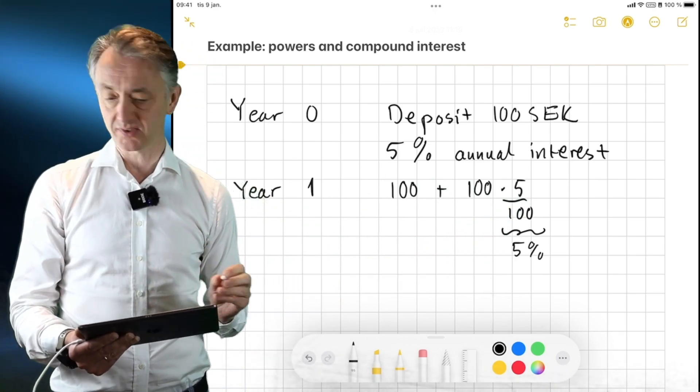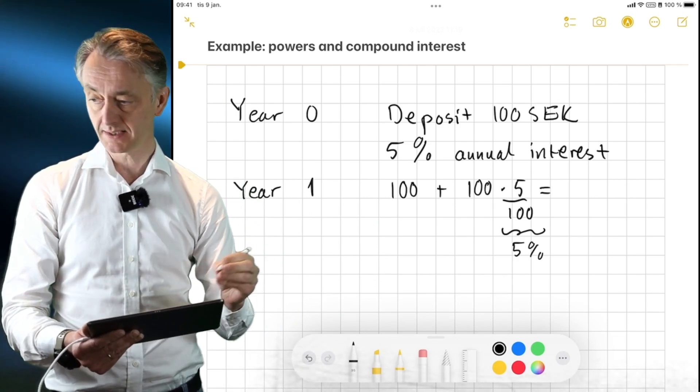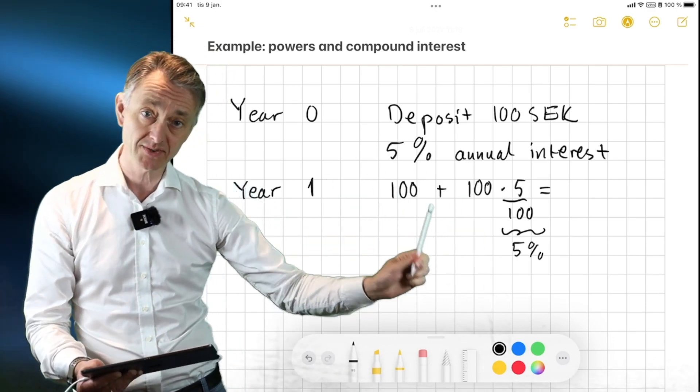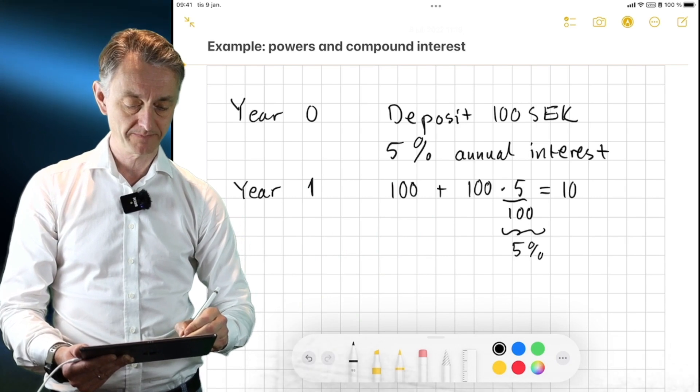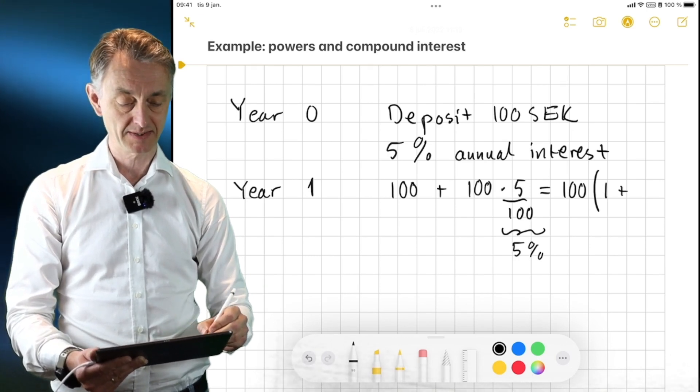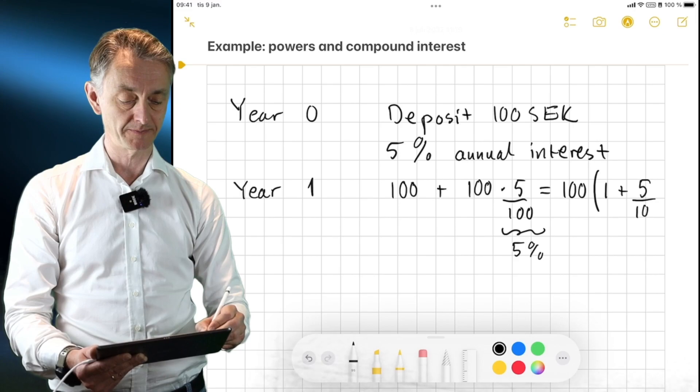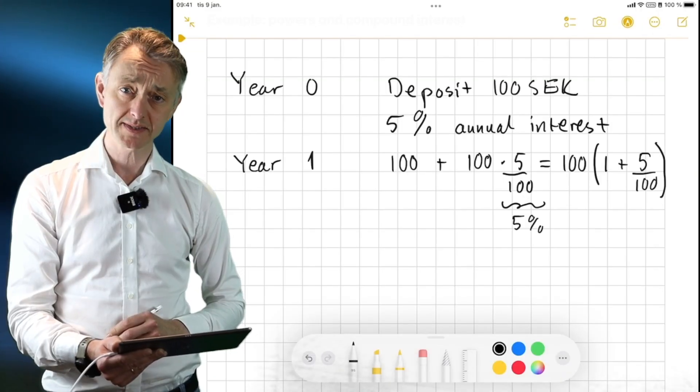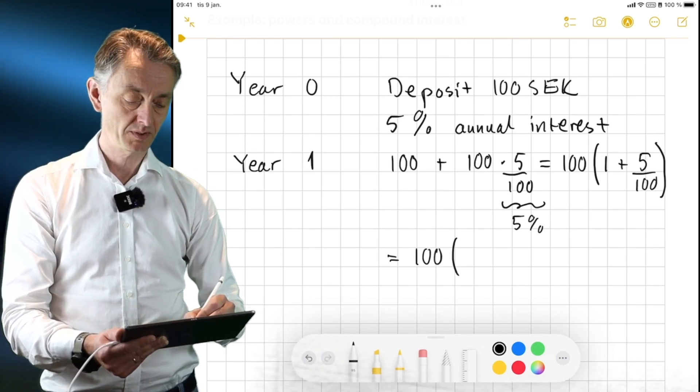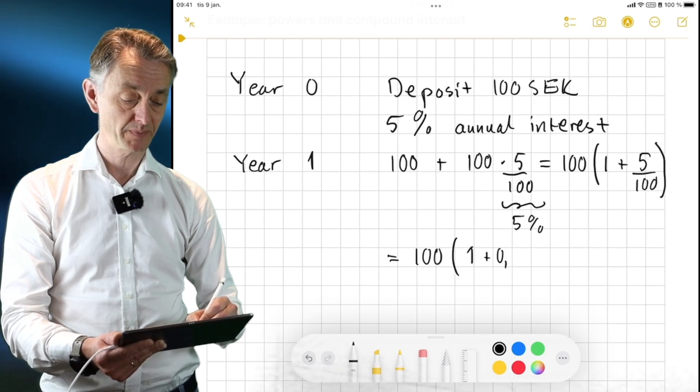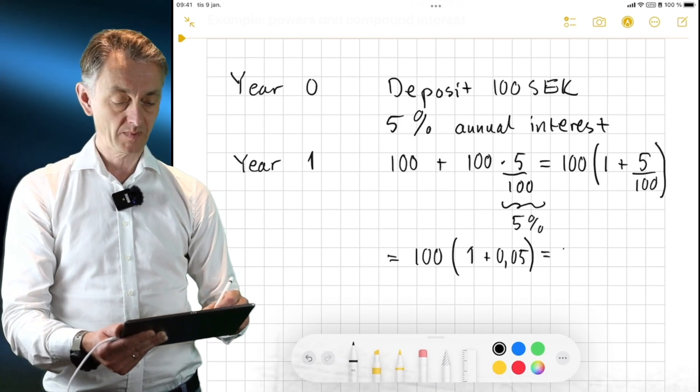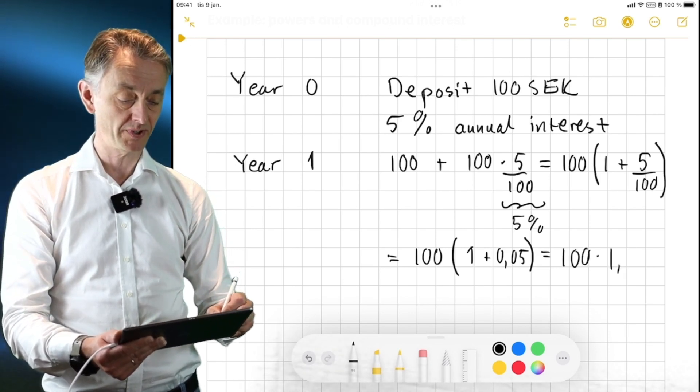So we can rewrite this in the following way. We can factor out 100, because 100 here and 100 there. So we factor the 100 out. So 100 times, and then we have these round brackets, then there will be 1 here plus 5 divided by 100. So this is equal to 100 times 1 plus 0.05. That is equal to 100 times 1.05.